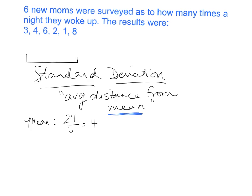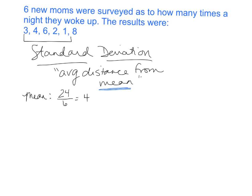Step two: I'm going to put those numbers in a column so I can go through the next steps. The next thing I want to do is find the average distance — how far away each value is from the mean. How far away two things are is subtraction, so one at a time I'm going to subtract the mean from all of these numbers.